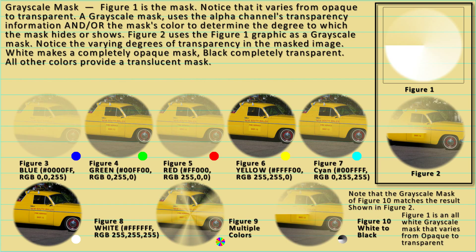This is the grayscale mask. Notice in figure one that the mask varies from completely opaque to completely transparent. The result of the mask set is shown in figure two. If you observe figures three through ten, you'll notice that color plays a major part in determining the opacity of the layer. Black is completely transparent, white results in a completely opaque mask, and all other colors result in a translucent mask.